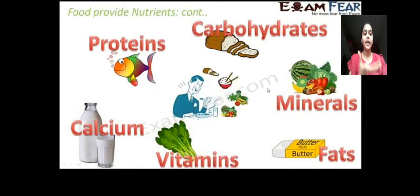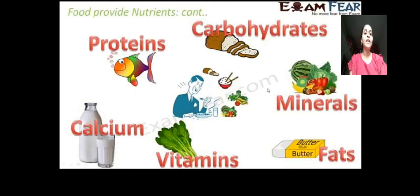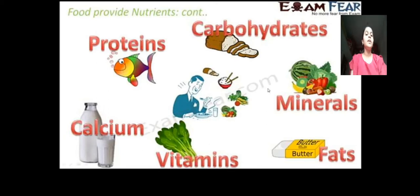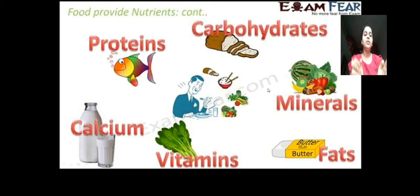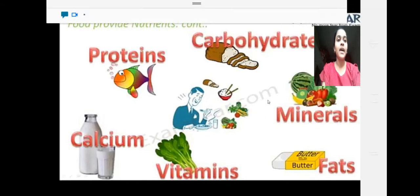Some food items are rich in specific nutritious components, but it is not necessary that one food is rich in only one nutrient — it may be rich in multiple nutrients. For example, milk is not only rich in calcium but will also give us carbohydrates. So food items contain multiple nutrients.